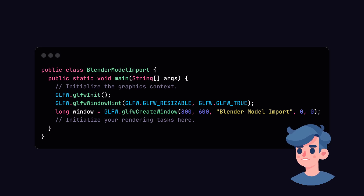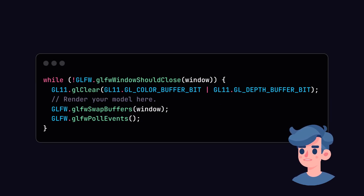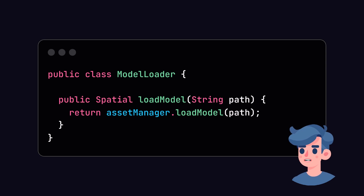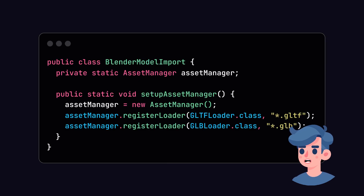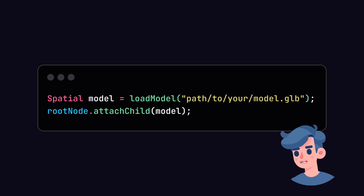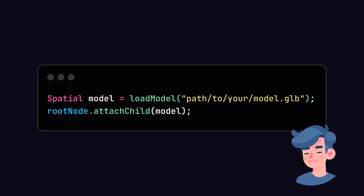With your dependencies set up, let's create a basic application to load and render our 3D model. Here's a simple Java class structure to start with. Next, we will set up the rendering loop. The rendering loop will be responsible for continuously drawing our scene until we decide to close it. Now let's discuss how to load and display our GLB model. We will use a library called jMonkeyEngine to help us render the GLB model. We will need to set up the asset manager so that it knows where to find our model files. Be sure to place your GLB file in the correct directory structure within your Java project. After setting this up, we can now load our model using the loadModel method in our render loop. Set the model path correctly to reference your exported GLB file.